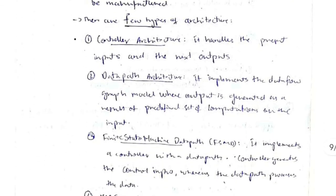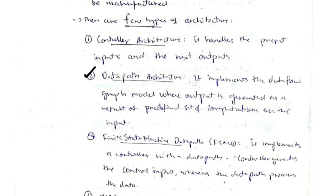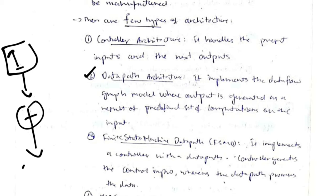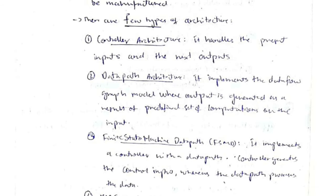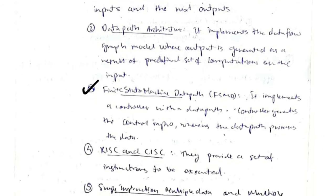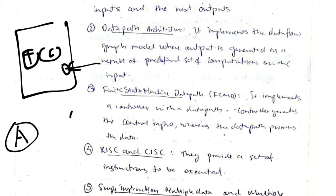Architecture types include: controller architecture (handles input and output), data path architecture (a graphical representation of how to process data — e.g., one plus two equals three), and finite state machine (FSM). In an FSM, for example a tea/coffee vending machine: the first state is whether a coin is inserted; then the user chooses tea or coffee, transitioning to state C or D; after dispensing, it returns to the initial state.